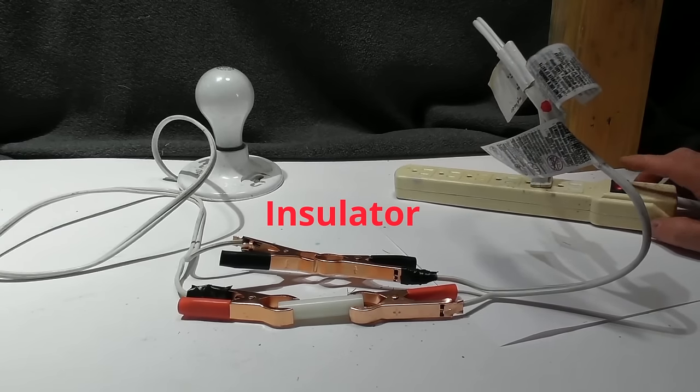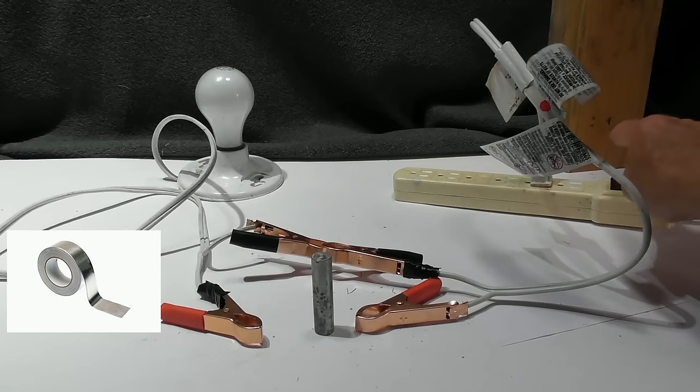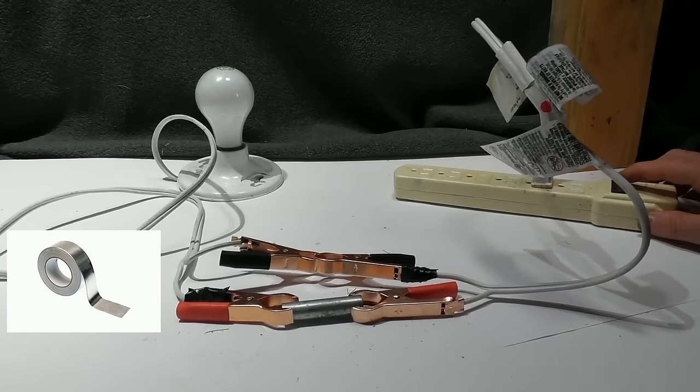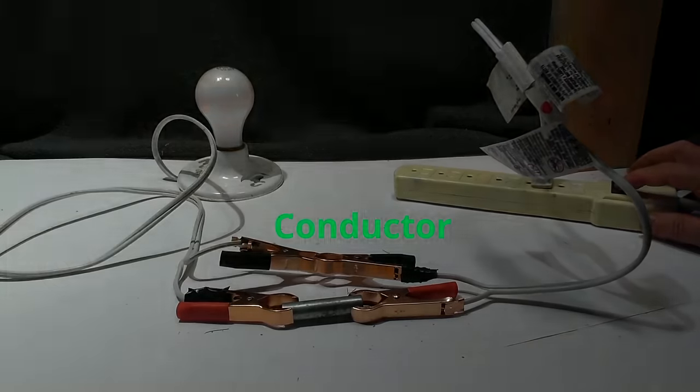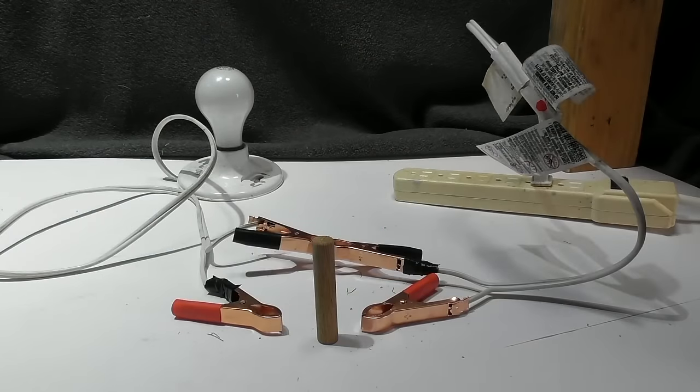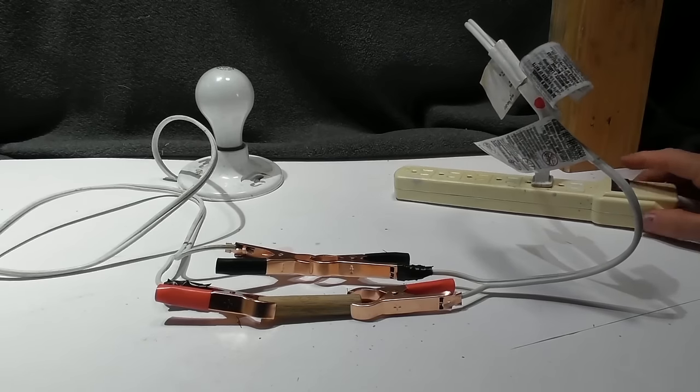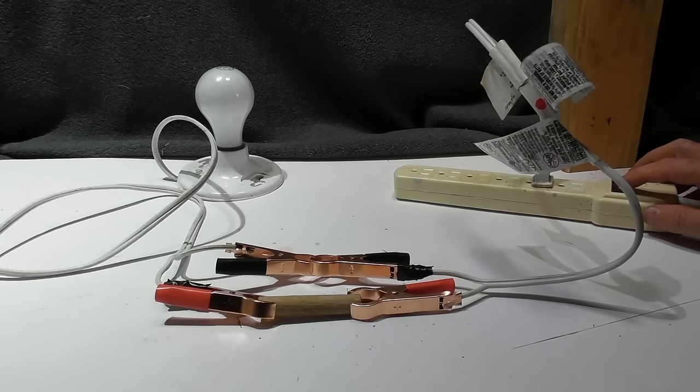Now we move on to another piece of metal, it's aluminum. Flip the switch and yes, it is a conductor. Now how about some wood? Hook it up, flip the switch, nothing happens. So it is an insulator.